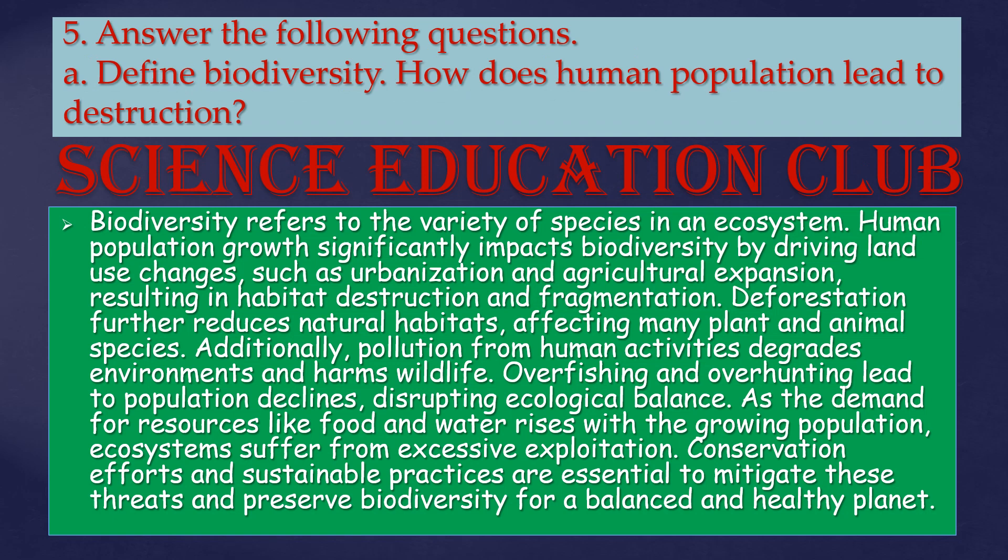Answer the following questions. Define biodiversity: how does human population lead to destruction of biodiversity? Biodiversity refers to the variety of species in an ecosystem. Human population growth significantly impacts biodiversity by driving land use changes such as urbanization and agricultural expansion, resulting in habitat destruction and fragmentation. Deforestation further reduces natural habitats, affecting many plants and animal species.